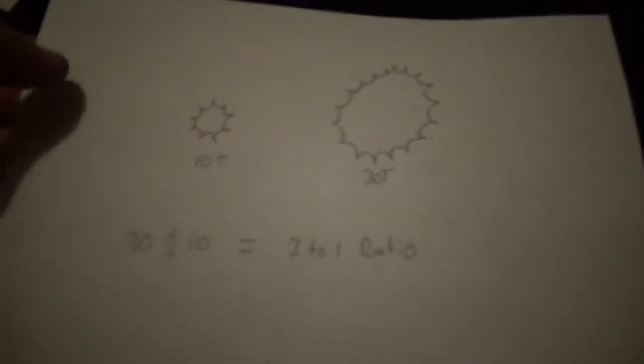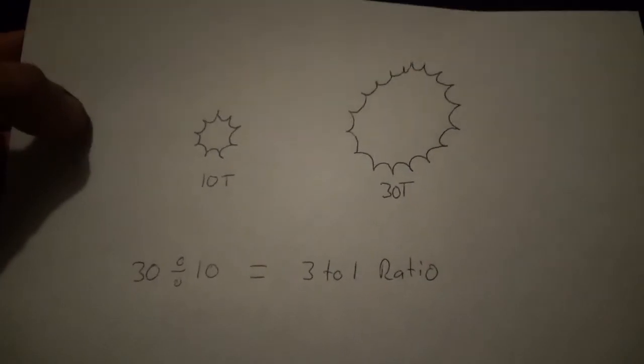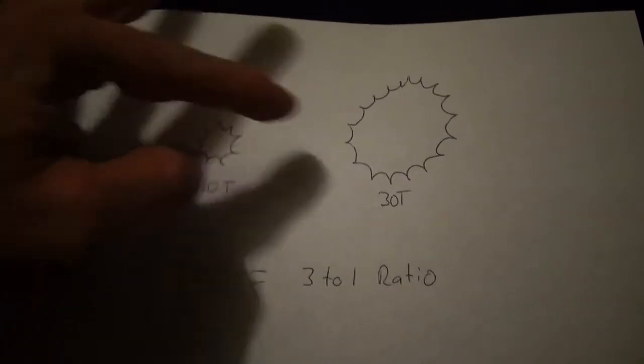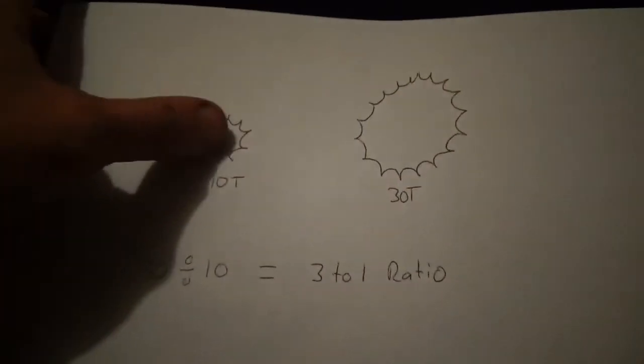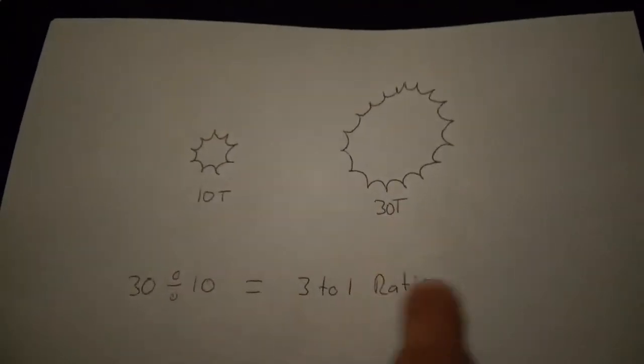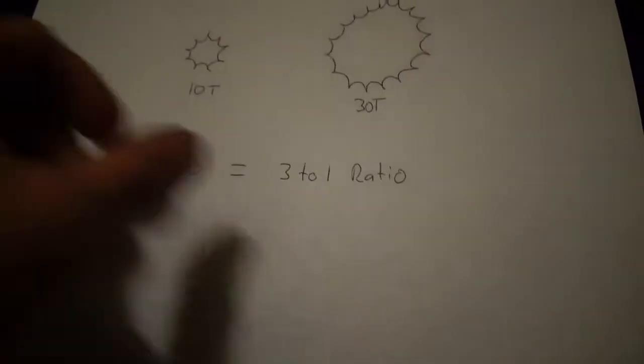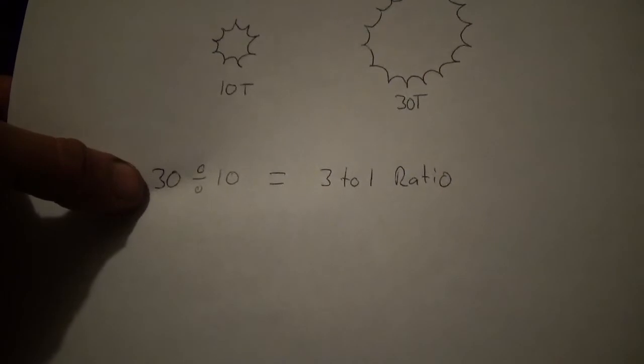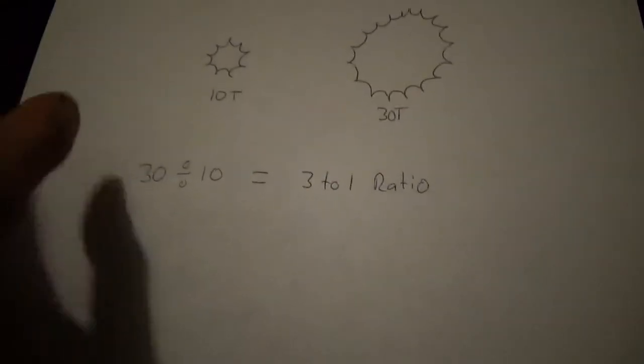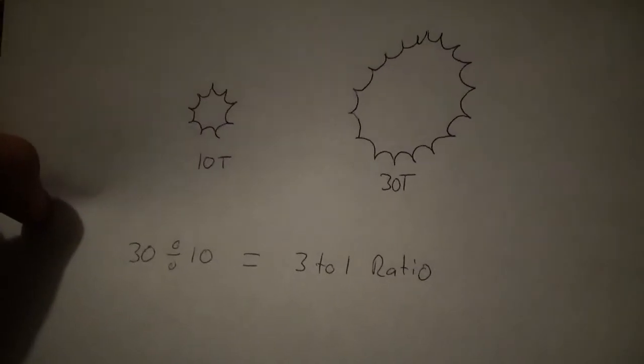Next we have teeth. Basically these just represent a sprocket, they're not actually that amount of teeth, but 10 teeth, 30 teeth. You divide the smaller into the bigger and end up with a three-to-one ratio.